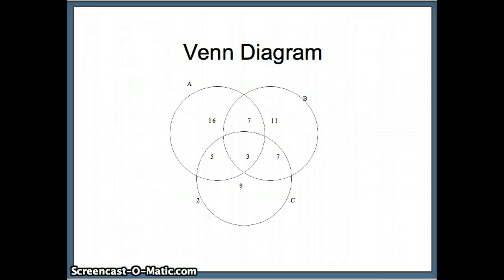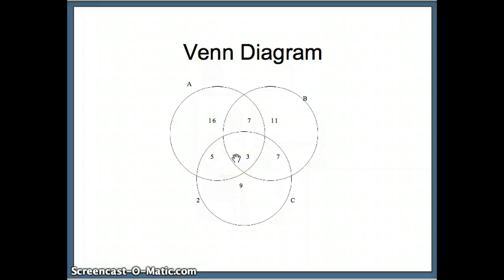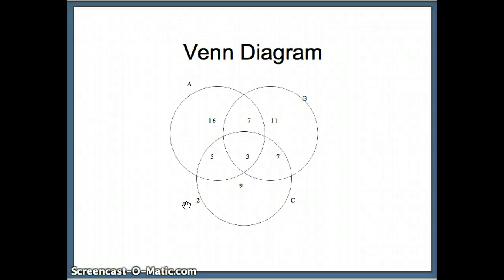Here's a Venn diagram. We have three regions: region A, region B, and region C with various numbers inside. In the middle where A and B and C overlap there are three elements, and outside we have two elements. We're going to use that information to help us answer some questions.